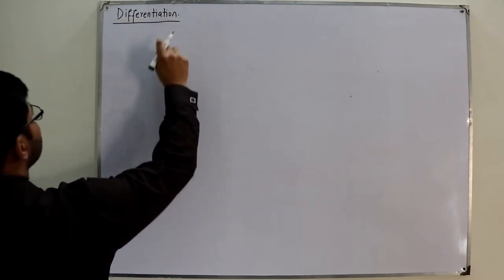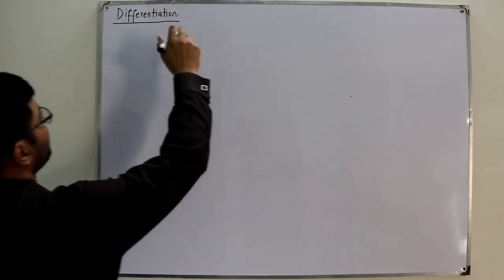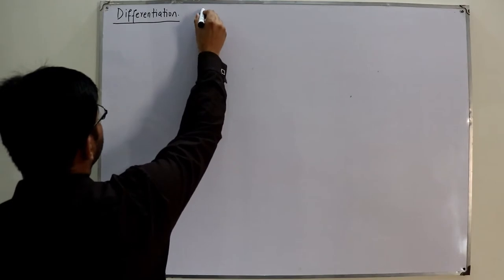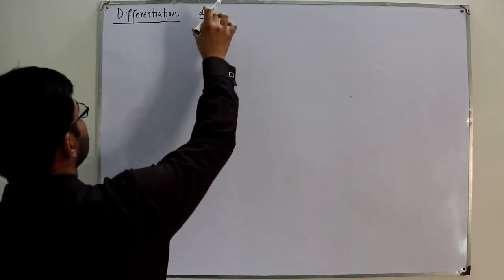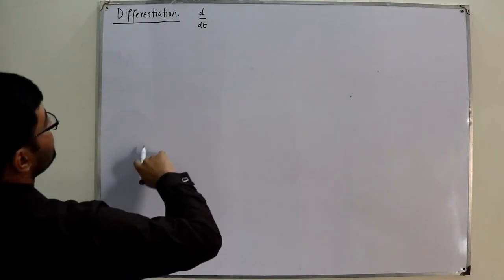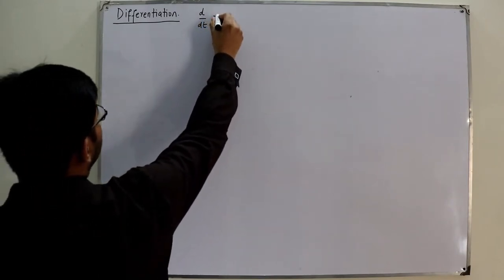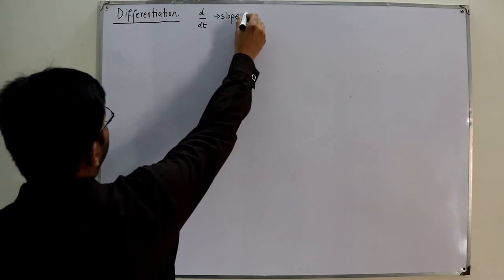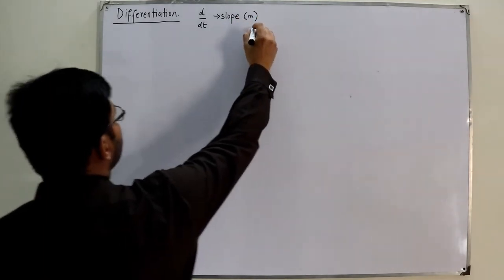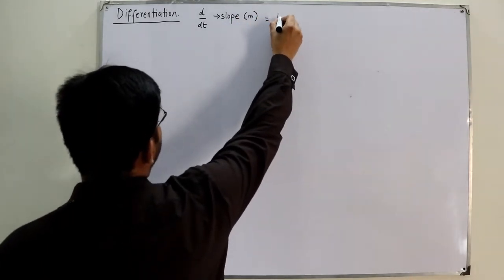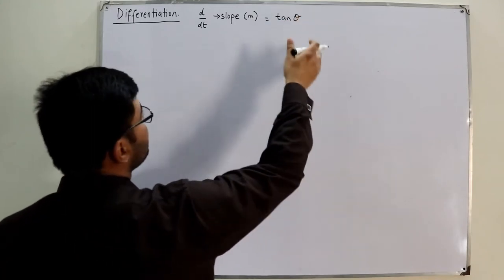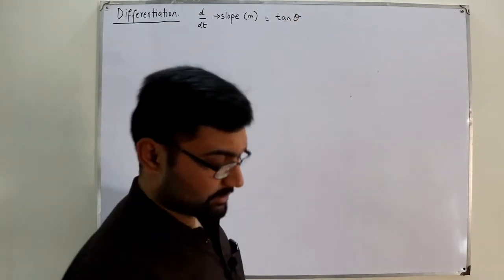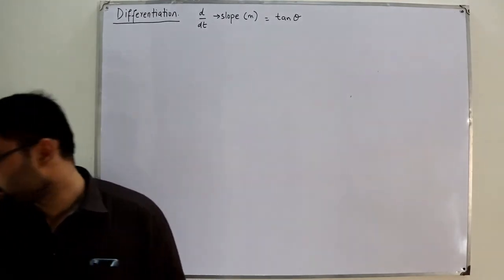Differentiation of continuous time signals — you need to find the change with respect to time, the small change in the signal with respect to small change in time. This gives you basically the slope of the signal, the slope represented by m, and this is also equal to the tangent of the angle theta that the signal is making with the horizontal axis.